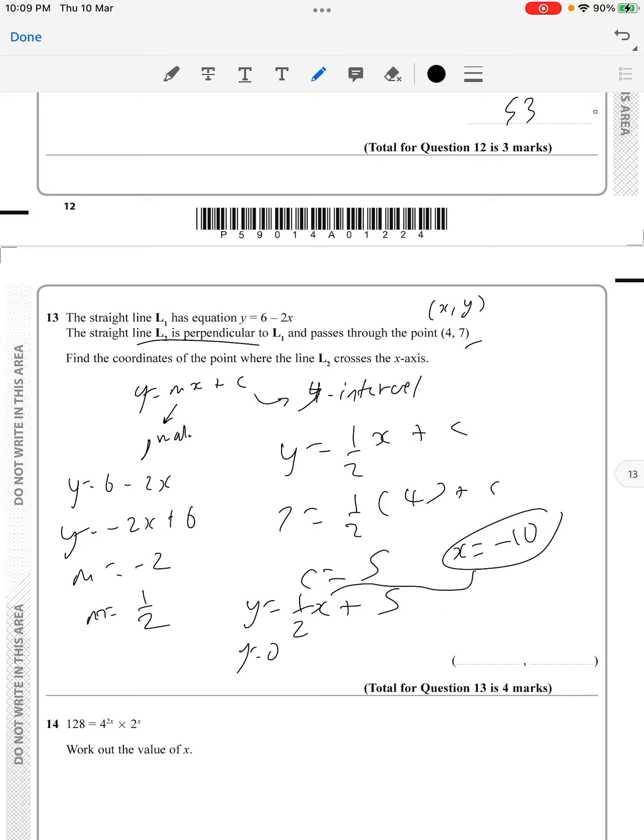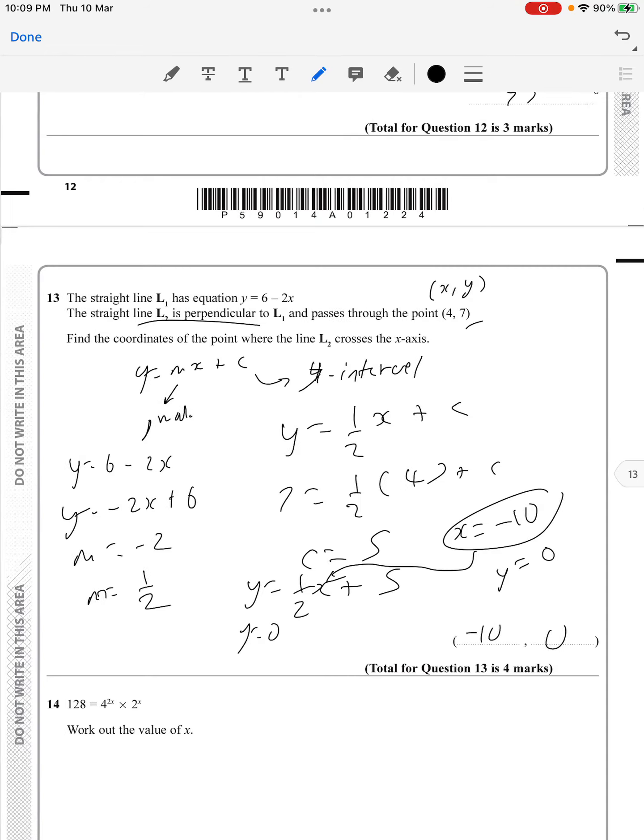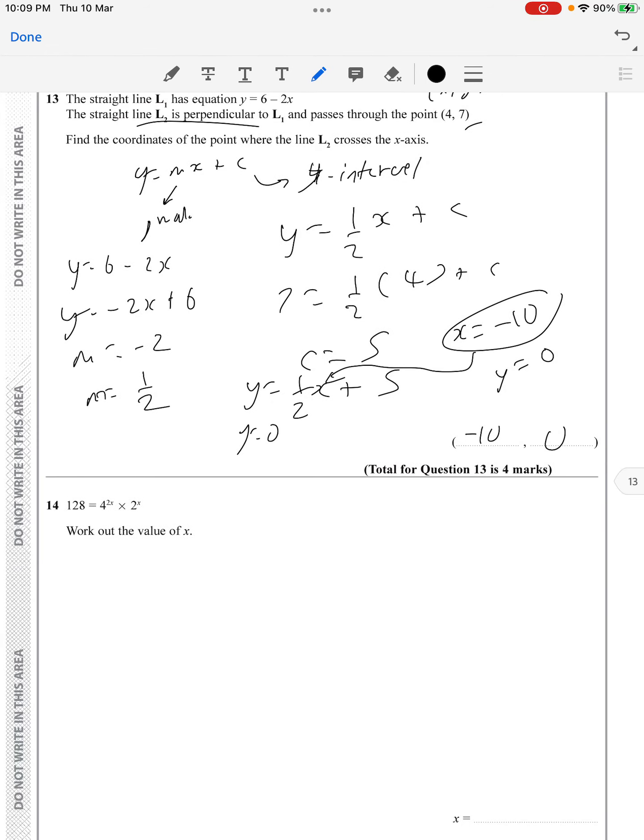x should be minus 10, and once you put x equals minus 10 into this equation, you get y equals zero. So the answer is (-10, 0). It's a matter of substitution.